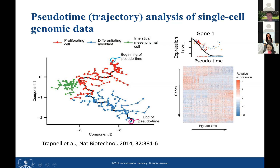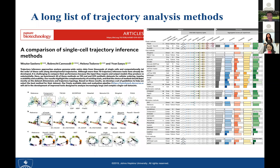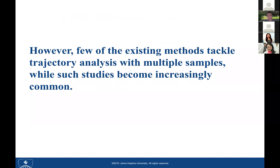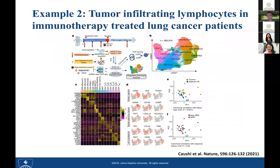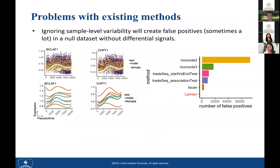In the past few years, many methods have been developed for pseudo-time analysis using single-cell RNA data. However, most of these methods only consider one sample, or treat cells in a dataset as if they were from one sample. A few consider the problem of comparing multiple samples representing different biological conditions. Multi-sample data has become increasingly common — for example, in the past two years, more than hundreds of COVID-19 patient samples have been profiled using single-cell RNA-seq.